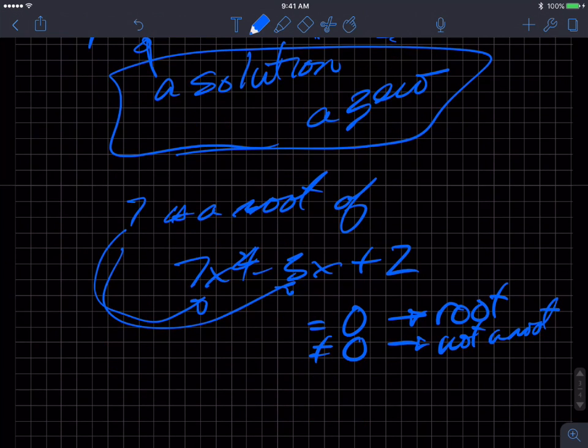That doesn't help us in some situations where we need to actually get the quotient. But if you had to do a quick and dirty check, and sometimes some problems will just ask you, is 7 a root? Well, shove it in for X and see what happens. If it's 0, it's a root. Not 0, it's not a root. That's it.